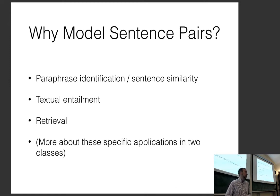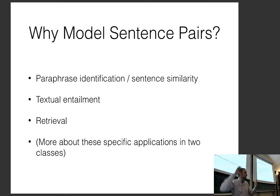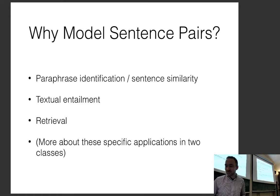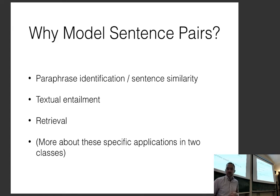Another task is retrieval — if you have a big database of sentences or responses, you might want to retrieve the best one. One example I use every day is the Google auto-response on Gmail, where someone asks about meeting times and it suggests a response like 'sure.' Retrieval tries to retrieve from a finite set of possibilities, as opposed to generation models, which we'll talk about later.